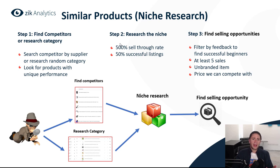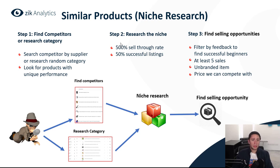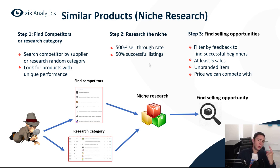You want to find niches with high demand, low competition, a diverse market, and enough sale earnings so you can take a small slice of the pie. Always look for a niche with at least 500% sell-through rate and not less than 50% successful listings. Make sure the niche is diverse — not just one seller who dominates, but sales split among most sellers.